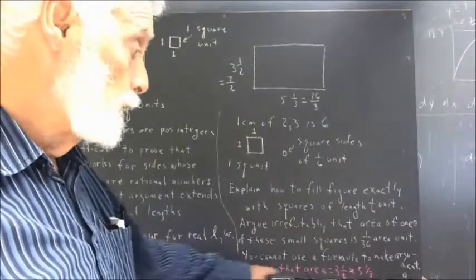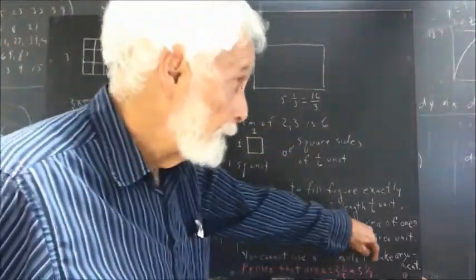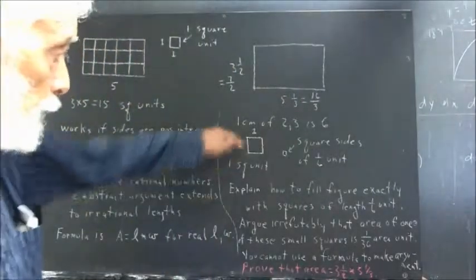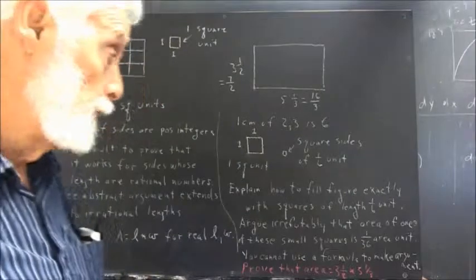And I can figure out how many of these squares it would take to make this square. Now, I want you to prove that the area of this square is three and a half by five and one-third by using this one square unit and this square of side one-sixth unit.